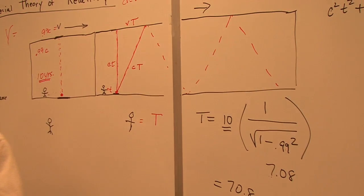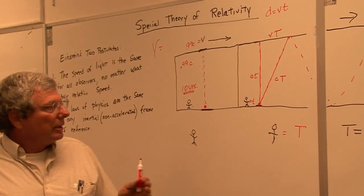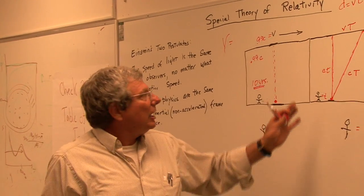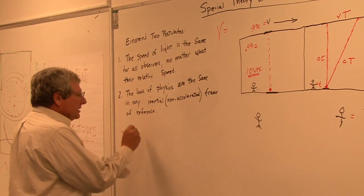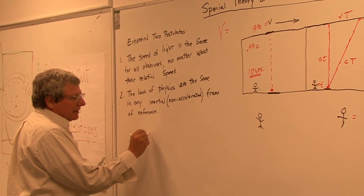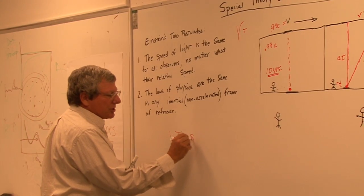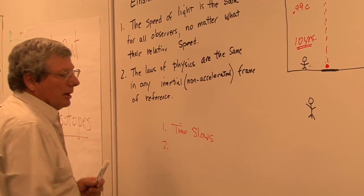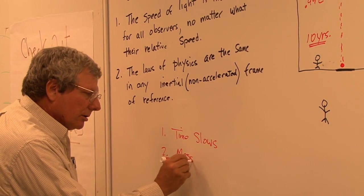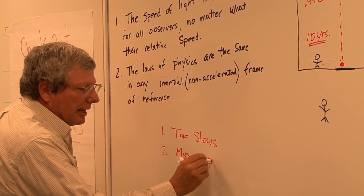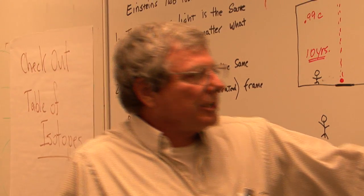And so therefore, it would calculate that 10 years in the spaceship would then be computed to 70.8 years. So this is one example. Now, there's two more effects of going fast, going close to the speed of light.